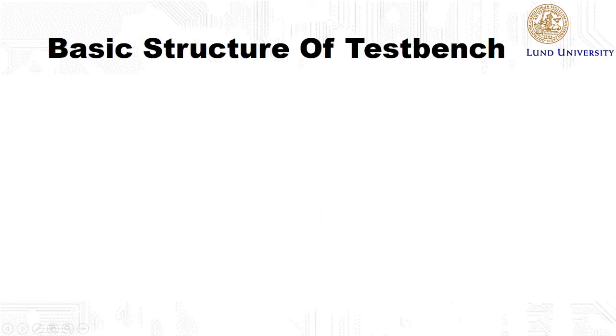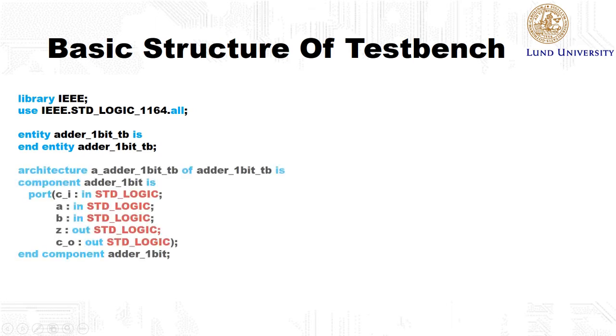We will now take a look at the basic structure of a test bench in VHDL. First we declare the entity, adder_1bit_tb, and this entity doesn't have any inputs and outputs as this is our test bench. Within the architecture of this module we declare the component that we would like to test. In this case we would like to test the adder_1bit and we specify the interface of this component.